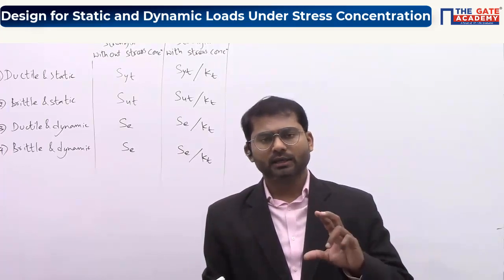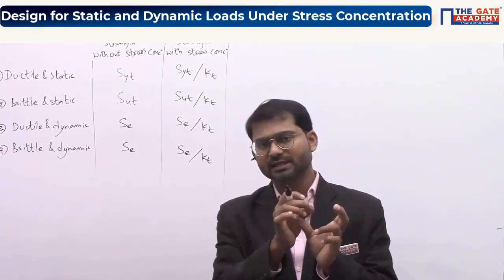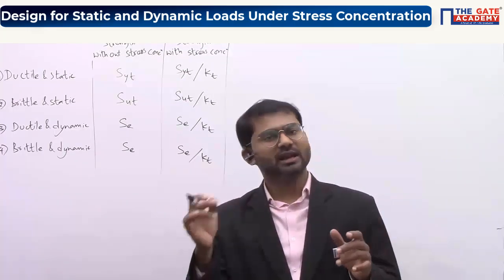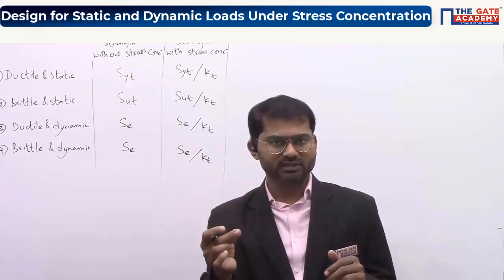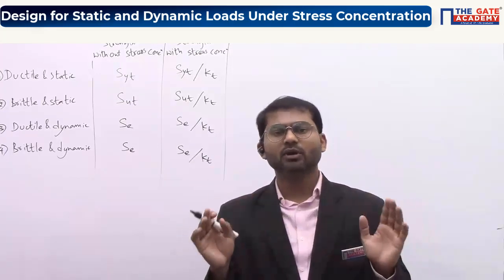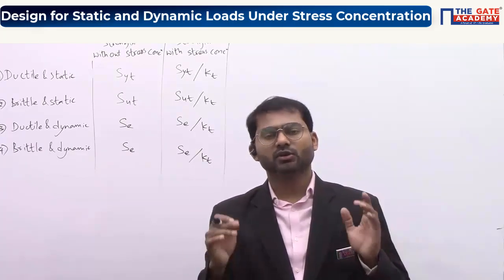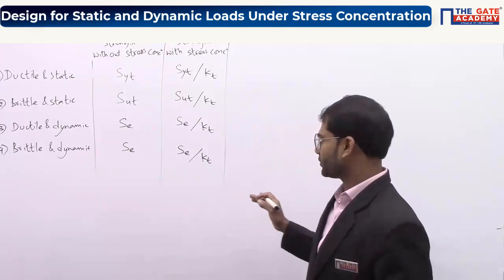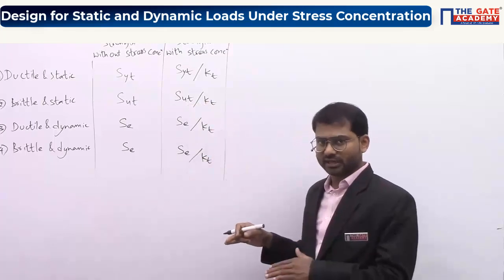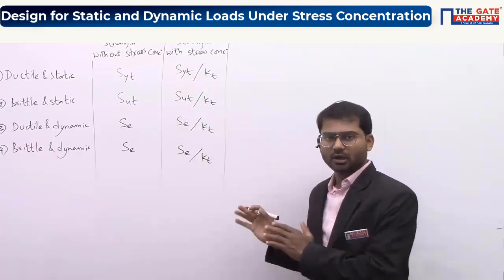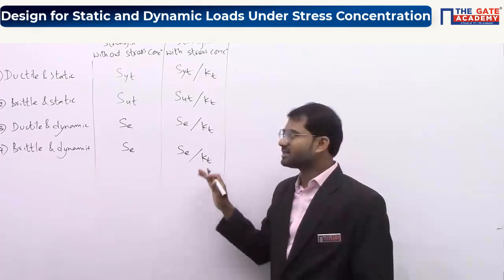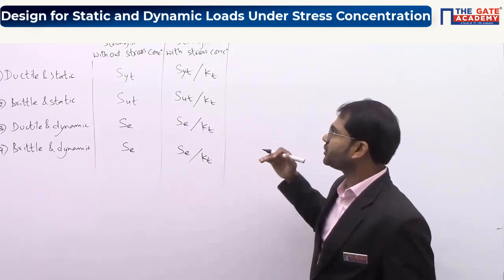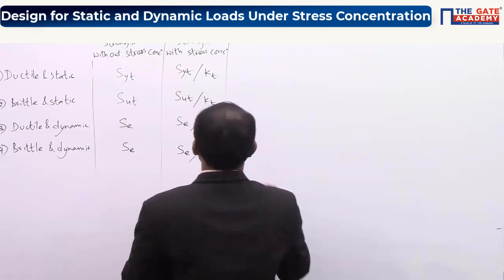If you take two cubical boxes of same dimensions with the same hole causing stress concentration — one made of aluminum and one made of another material — the Kt value will remain the same for both, because it only depends on geometry. That is the limitation of theoretical stress concentration factor. These theoretical answers are what we expect, but from experiments the results are different.